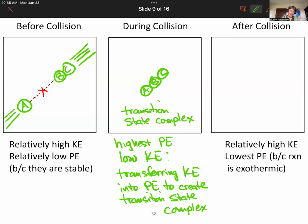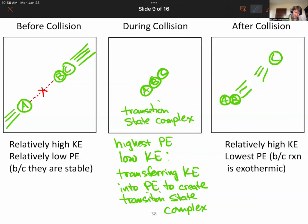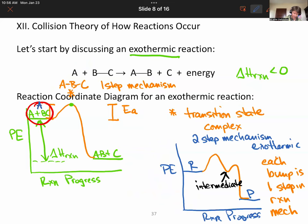After the collision, the transition state complex breaks up into AB and C, going their separate directions. They have relatively high kinetic energy because they're moving fast again, and the lowest potential energy because the reaction is exothermic. So the products A-B and C are at the lowest energy point on the diagram. That is collision theory, and we need to talk about it in the context of reaction mechanisms because reaction mechanisms involve actual collisions.